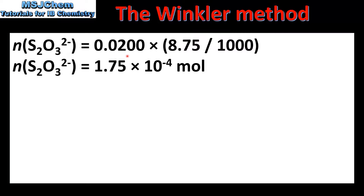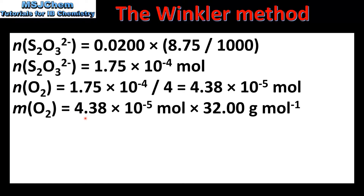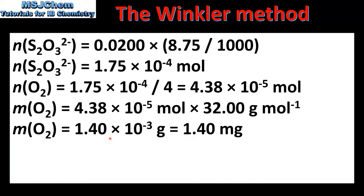Multiplying the concentration by the volume in dm³ gives 1.75 × 10⁻⁴ moles. To find the amount of dissolved oxygen, we divide by 4, since the ratio of oxygen to sodium thiosulfate is 1 to 4. This gives 4.38 × 10⁻⁵ moles of dissolved oxygen. Converting to mass gives 1.40 × 10⁻³ grams, or 1.40 milligrams.